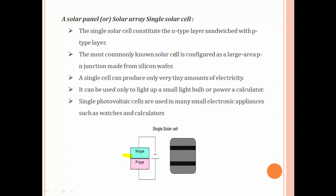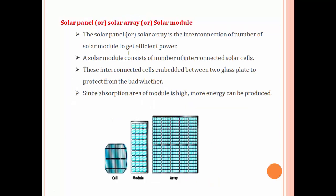The most commonly known solar cell is configured as a large area p-n junction made of a silicon wafer. A single cell can produce only very tiny amounts of electricity — that is why single cells are used for electrifying small devices like watches or calculators.